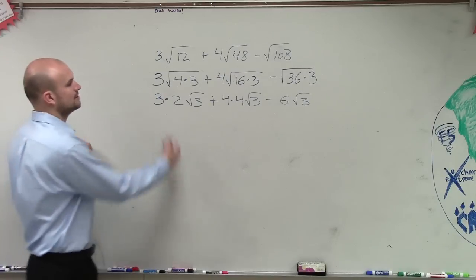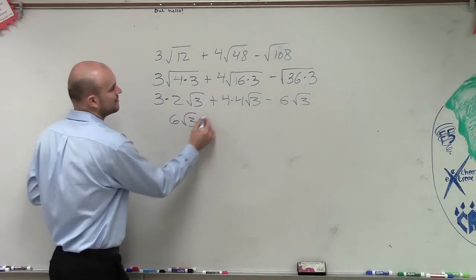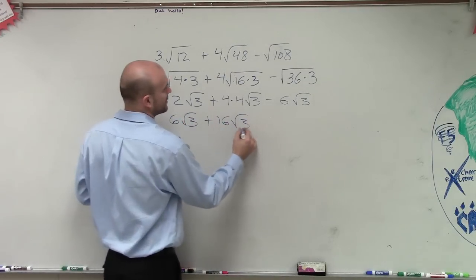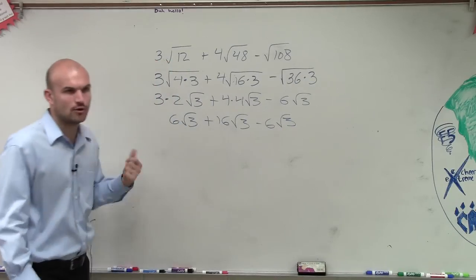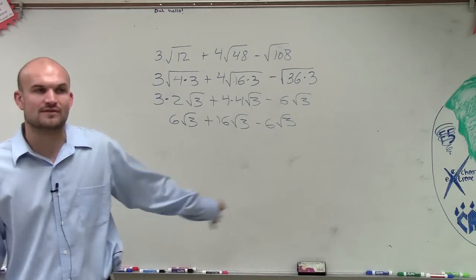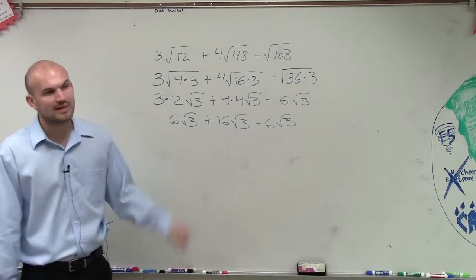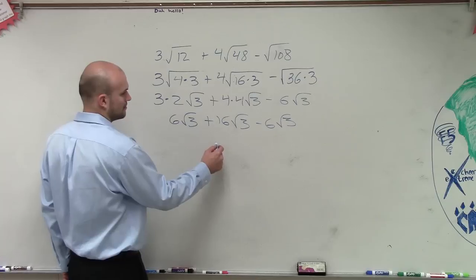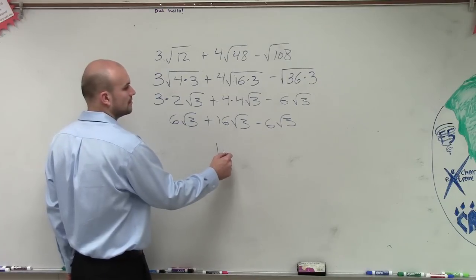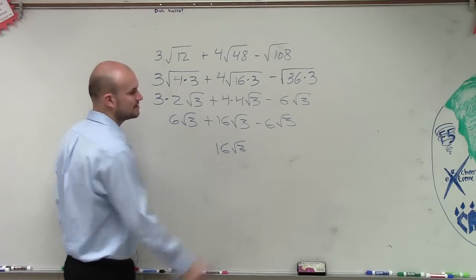So now what we can do is 3 times 2 is 6, square root of 3, plus 16, square root of 3, minus 6, square root of 3. Now we just follow order of operations. Add and subtract from left to right. 6 plus 16 is going to be 22, minus 6 is going to be 16, square root of 3.